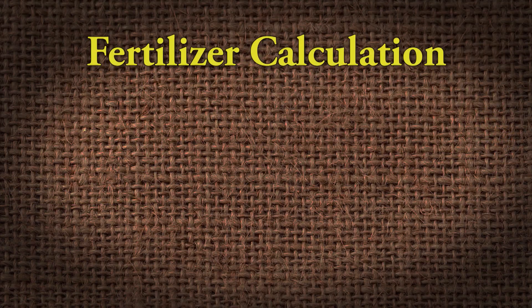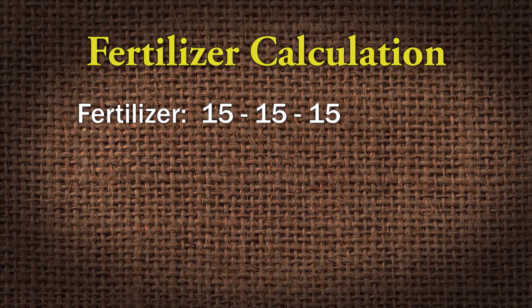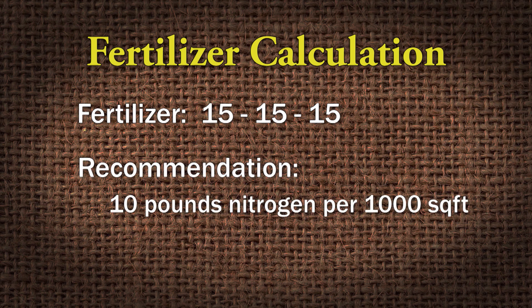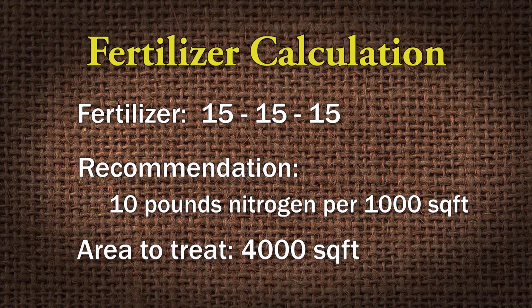All right, speaking of using math, let's do a math problem and see if we can do one quickly. What I've got here is a triple 15 fertilizer, and the soil test recommendation calls for 10 pounds per thousand square feet. I know that I have 4,000 square feet that I need to treat — I've done all my subtractions, additions, and multiplications — and I've got 4,000 square feet to treat. So I just set up an algebraic expression.